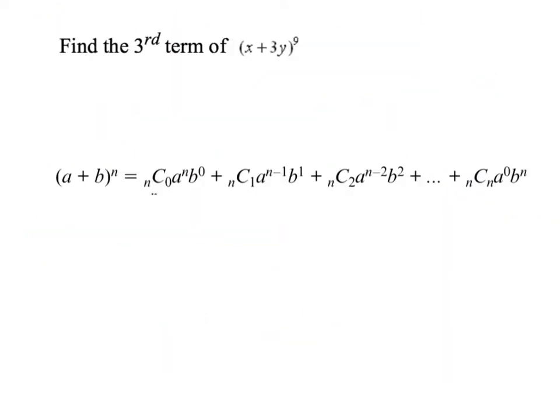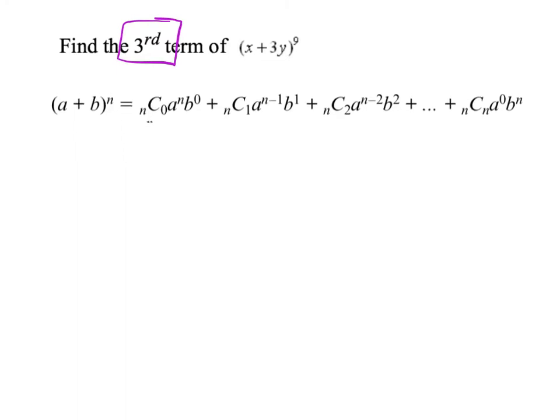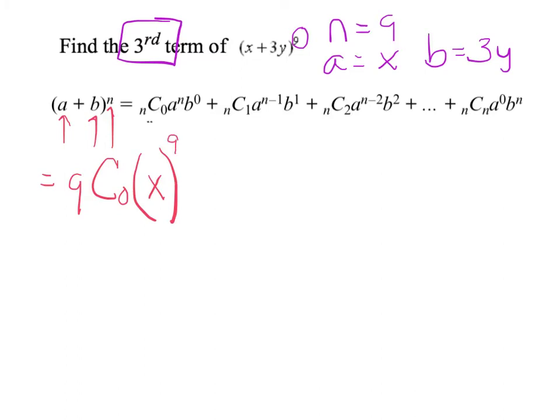Now in our next example, they don't want the whole thing. They gave us a very easy description, and they just said find the third term. So notice, I'm going to use the binomial theorem that's given on my sheet and count out to the third term. So I'm going to start with my n is 9. That's the exponent. My a is the first term, and my b is the second term. Alright, so let's just first by identifying those. So I've got my a, I've got my b, and I've got my n. Now we'll just follow the formula.